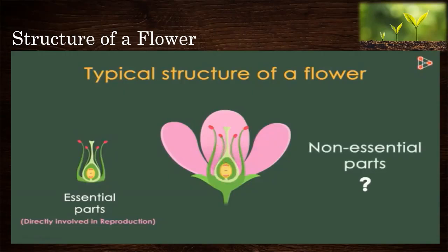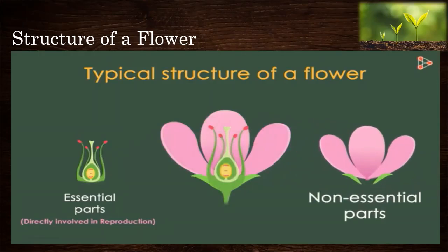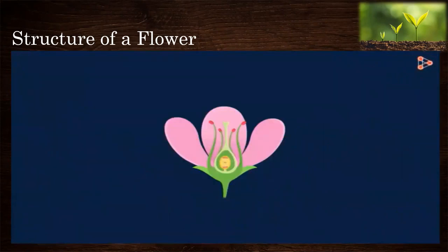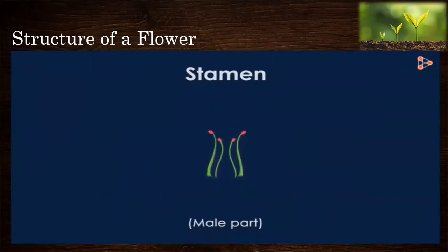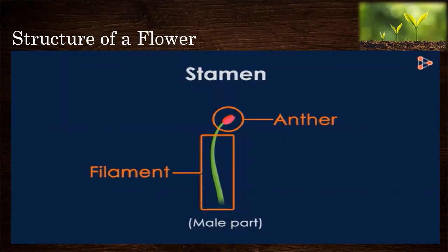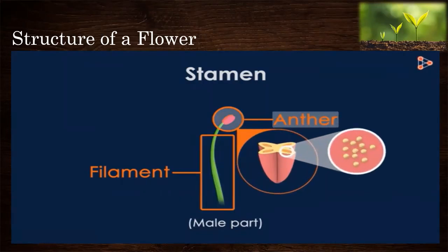Floral parts such as the petals and sepals are the non-essential parts of a flower. They do not take part in reproduction directly. The stamen is the male part, and it has two distinct components: the anther and the filament. The anther bears minute round bodies called pollen grains, which play an active role in reproduction.